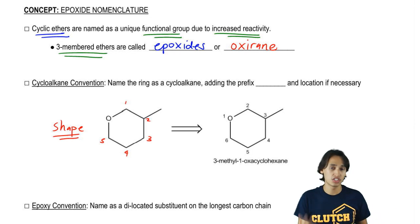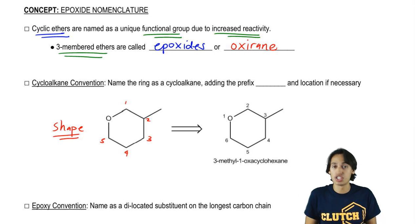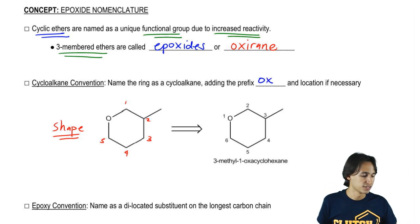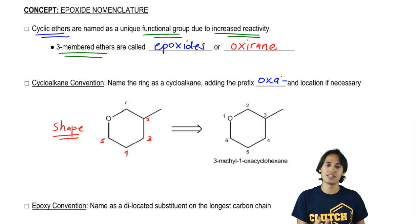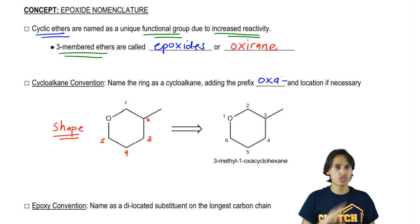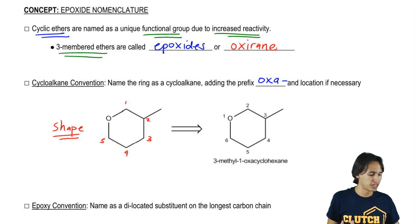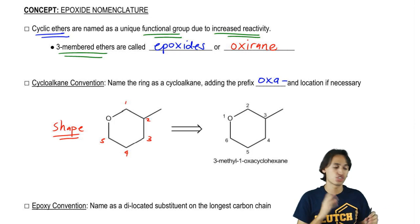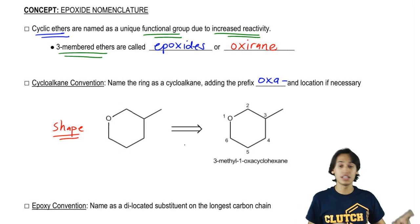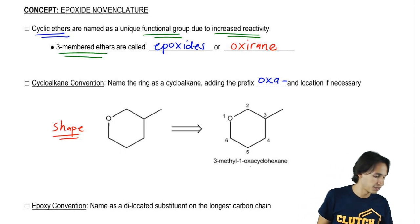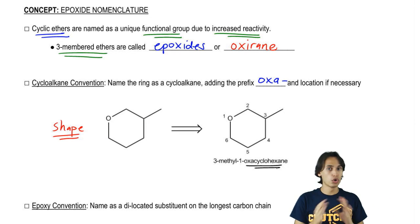So this would be a cyclohexane first of all as our root. Now the difference is if we have oxygens inside of a ring, which is by definition a cyclic ether, then we're going to add the prefix oxa. And what oxa is going to tell us is that there is one member of this ring that is an oxygen. So if I call it oxacyclohexane, what I'm saying is that I have a six-membered ring where one of the atoms is an oxygen, not a carbon. And then obviously location if necessary.